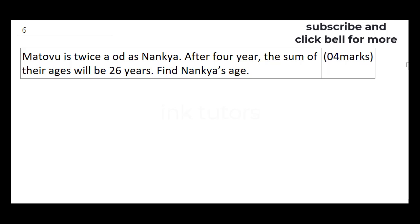Question 6 says: Matovu is twice as old as Nankia. After 4 years, the sum of their ages will be 26 years. Find Nankia's age.